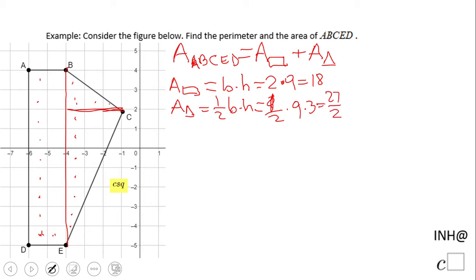So we have 18 plus 27 over 2, which equals 63 over 2. If you want the fraction, that's 63/2 square units. If you need a decimal, use a calculator.